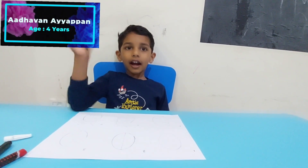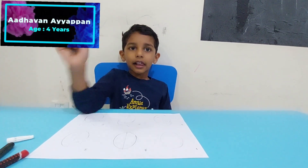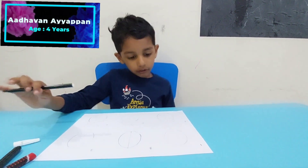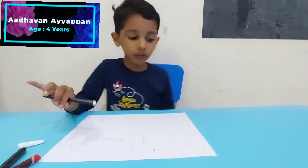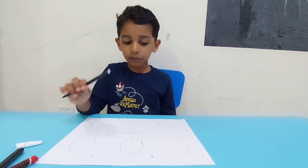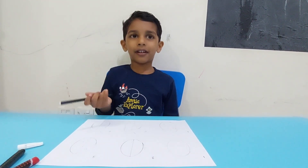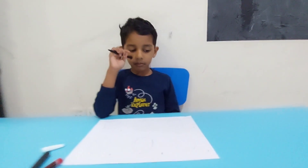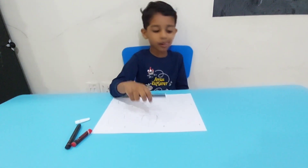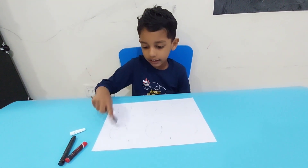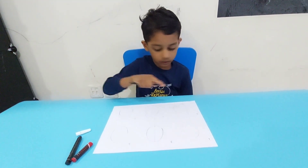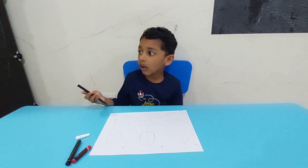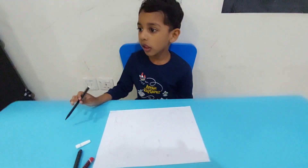Hi! What are we going to draw today? I'm going to draw step by step with shapes. How many steps are there? 1, 2, 3, 4, 5, 6. Six steps. Start to draw.